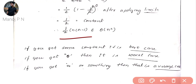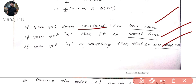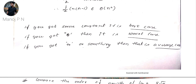So f(n) = (1/2)·n·(n−1) belongs to Theta(n²). We have three cases: when we get a constant that corresponds to Theta, when we get zero that corresponds to Big O, and when we get infinity that corresponds to Omega.